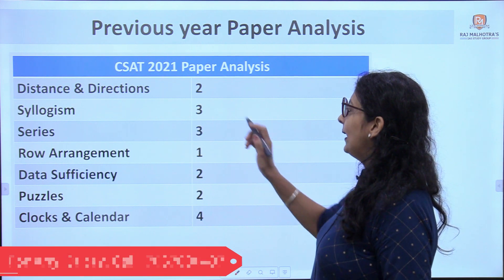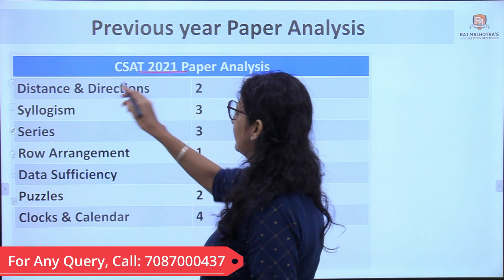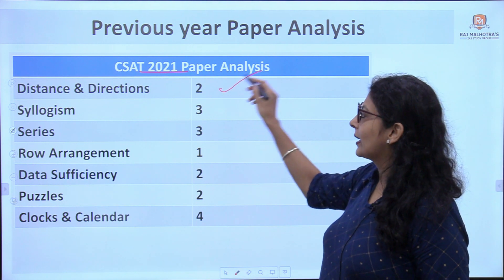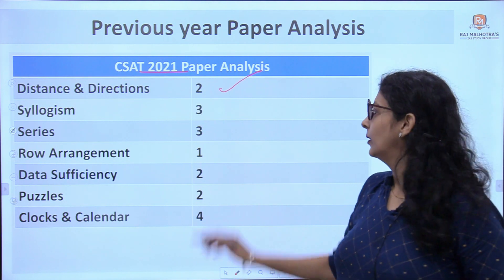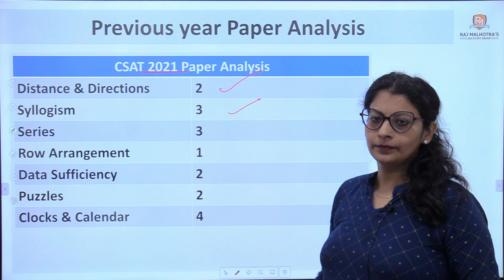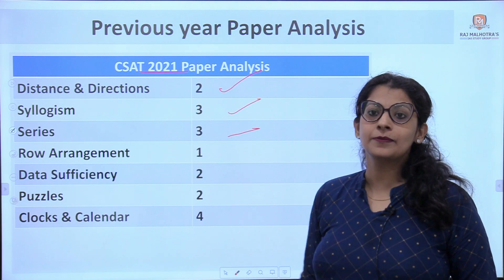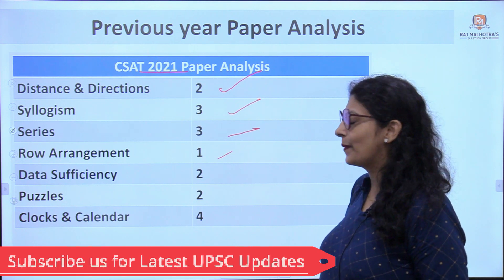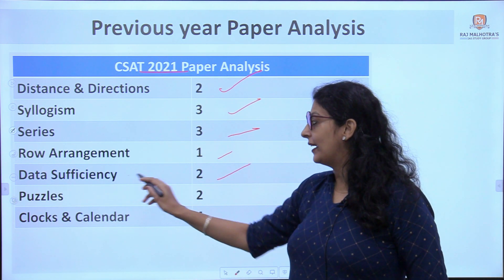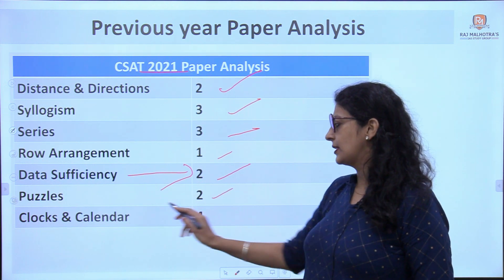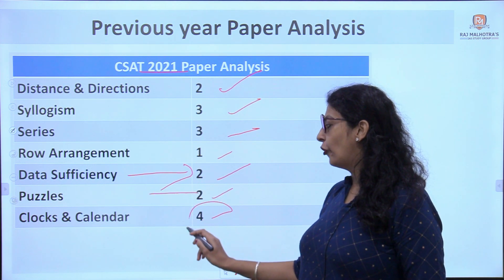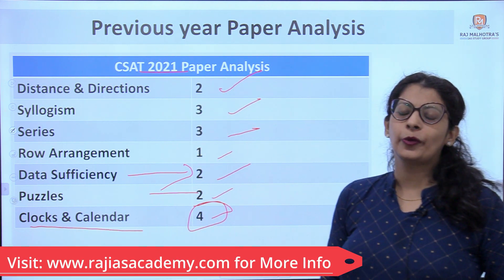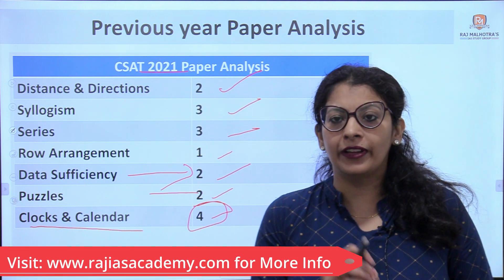In CSAT 2021, two questions came from Distance and Direction, three from Syllogism, three from Series, one from Sitting Arrangement, two from Data Sufficiency, two from Puzzle, and four from Calendar and Clock. Calendar and Clock is a very important topic — never leave it out, and prepare it very deeply.